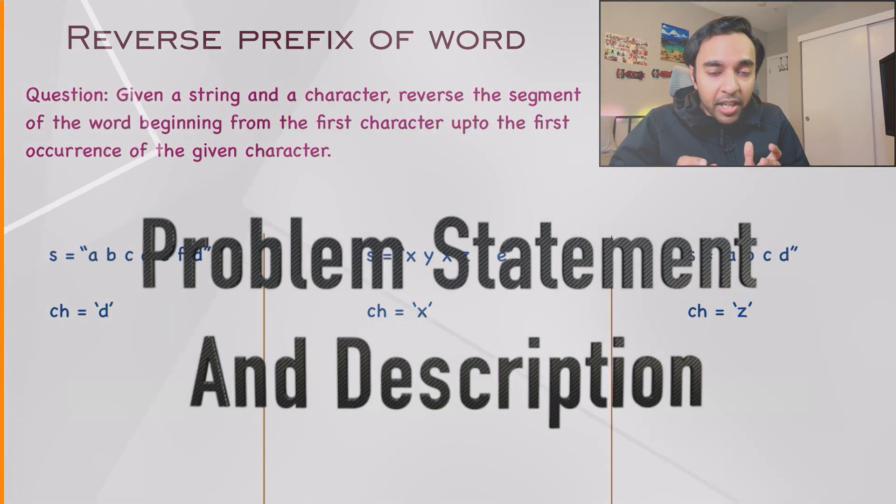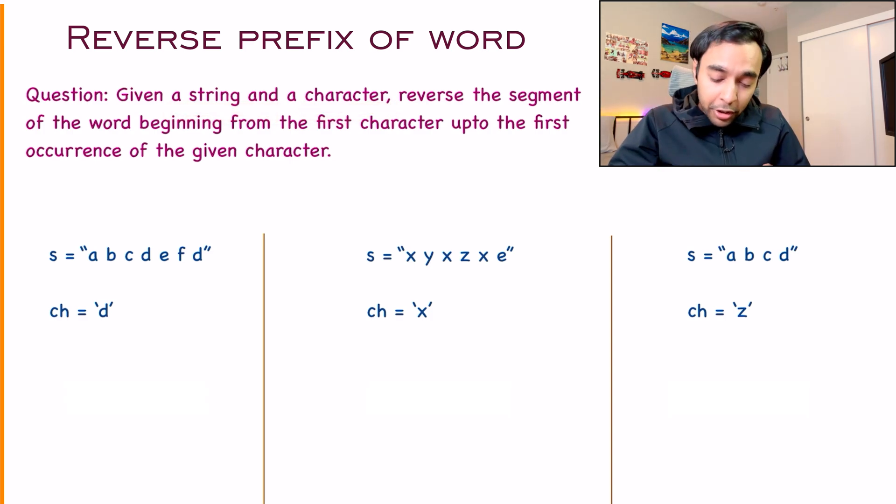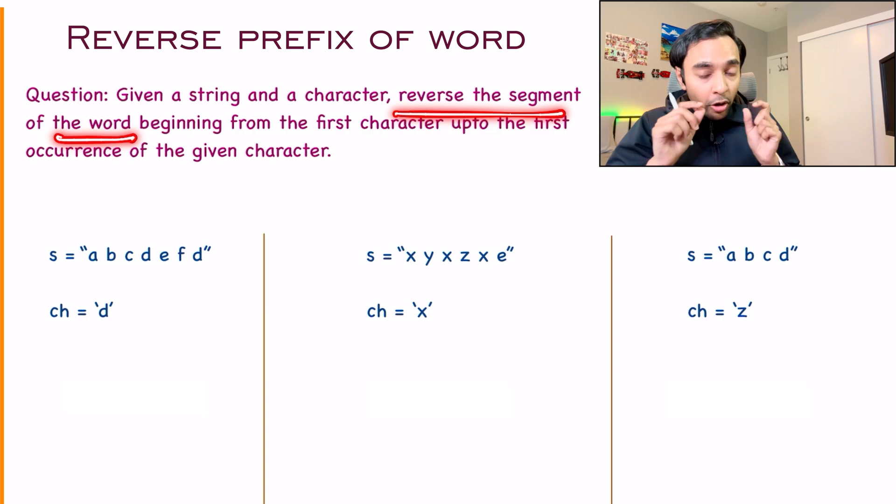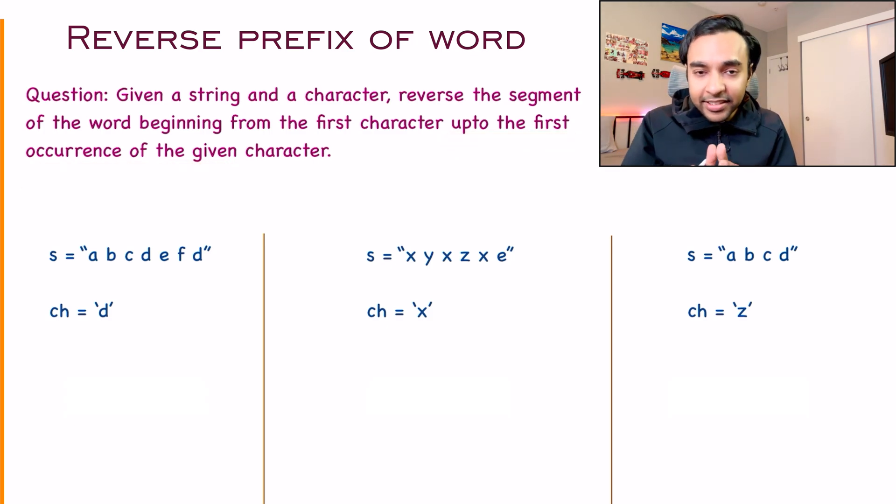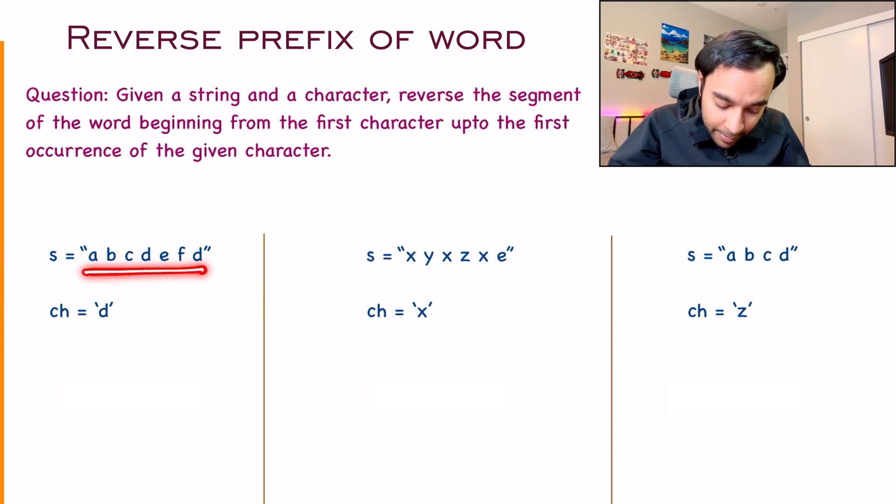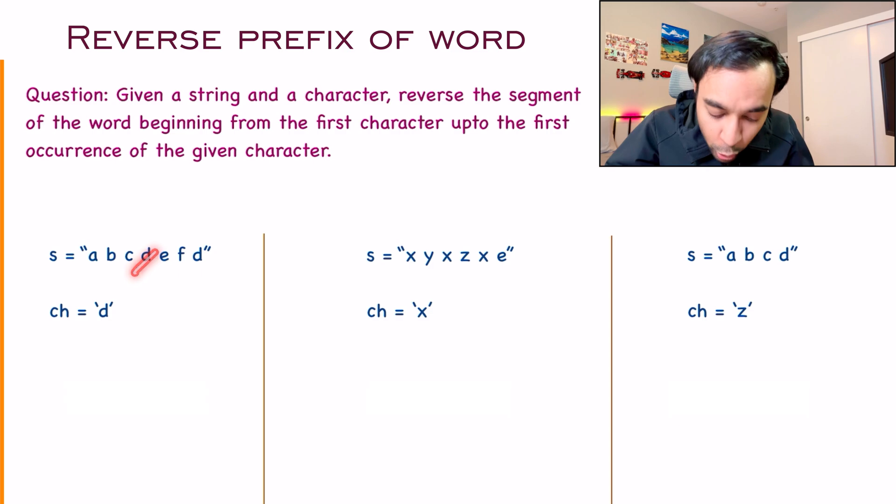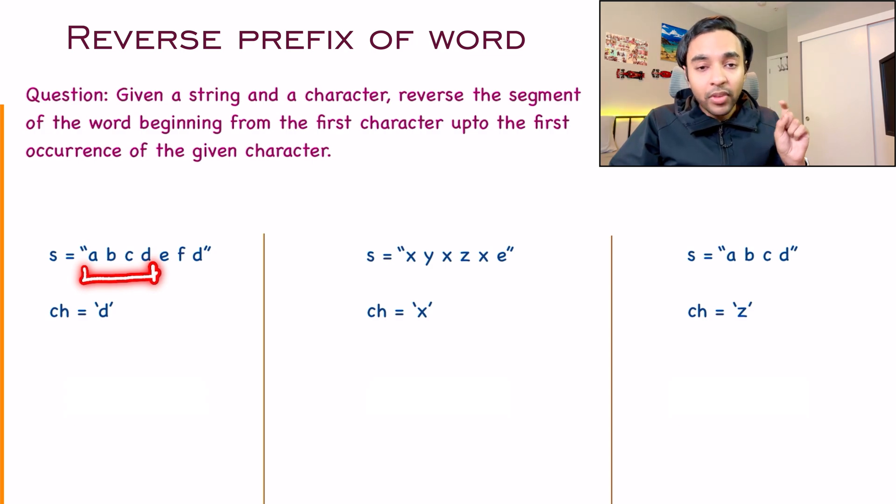When you look at the problem statement, it is pretty straightforward. You are given a string and a character. What you need to do is reverse the segment of the word starting from the beginning up to the first occurrence of the character that is given. So what does this mean? For example, I have my first test case. This is my particular string and the character I have to look for is 'd'. If you notice, I have two d's in my input string. You have to find the first occurrence of this and then for all the characters from beginning up till this particular character, you just have to reverse it.